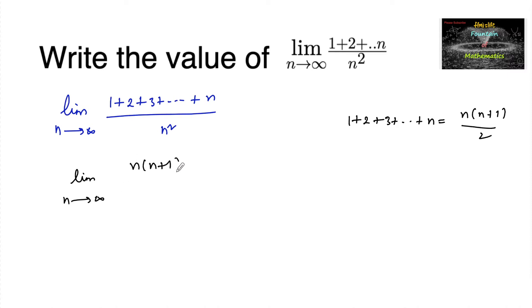N into n plus 1 upon 2n square. So we can write here limit n tends to infinity. If I take n common, n times 1 plus 1 upon n, divided by 2n square.